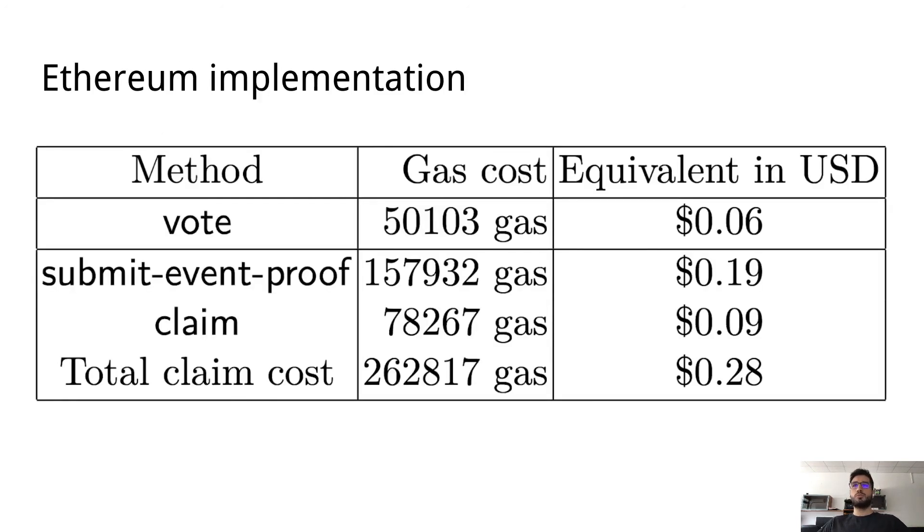Our final contribution is that we have implemented this on Ethereum. It's basically a smart contract that mints new tokens if a corresponding burn on Bitcoin has been made. The costs are as little as 28 cents per burn.